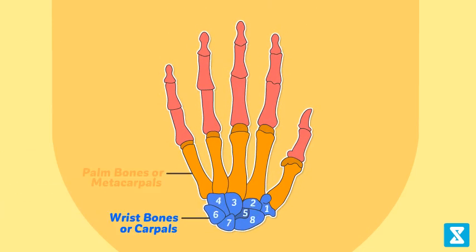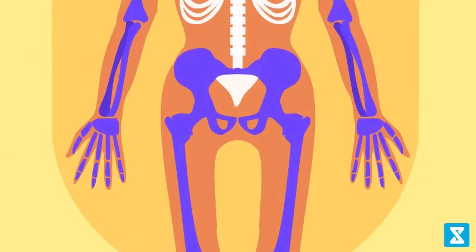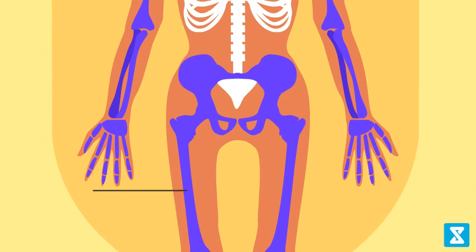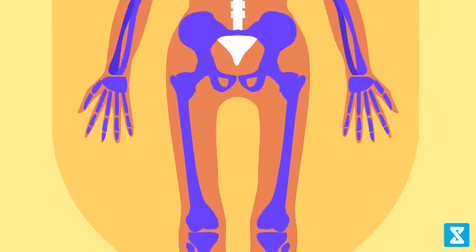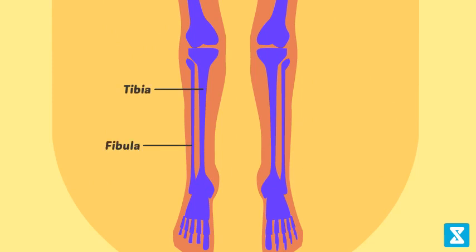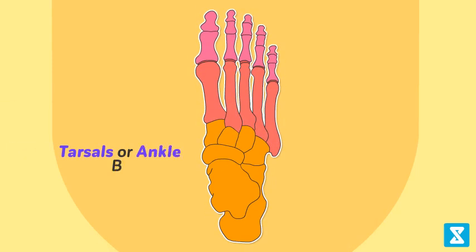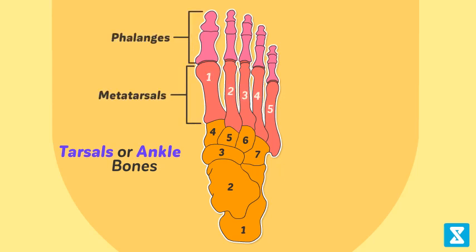The lower limbs comprise the femur or thigh bone, which is the longest bone of the body, and the tibia and fibula. Tarsals or ankle bones are seven in number, metatarsals are five in number, and phalanges are 14 in number, forming the bones of the lower limb.